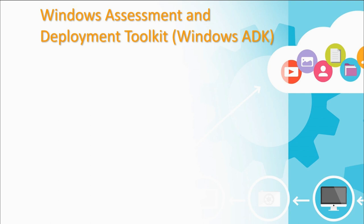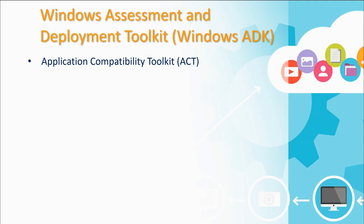Let's look at the Windows ADK tools in more detail. The first tool is the Application Compatibility Toolkit, or ACT. It's included with Windows ADK and is free. You install it on a computer in your environment and it can scan other computers on your network, inventorying what software is installed and identifying any incompatibility issues before you deploy a new version of Windows.